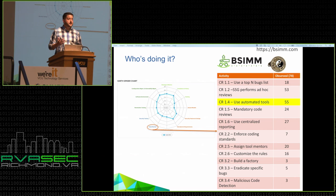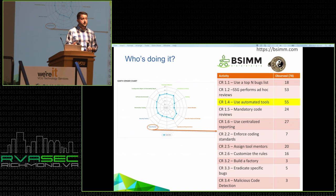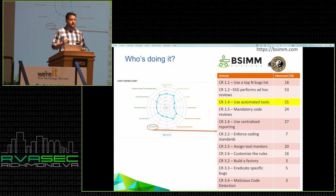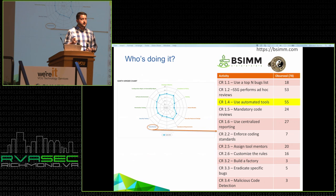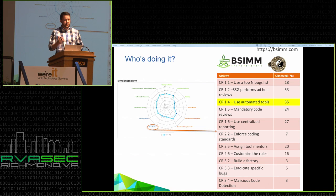The most common activity is 'use an automated tool.' That means at least 55 of 78 firms are buying static analysis tools. That's been consistent across different versions of BSIMM over the years. Everybody buys a tool — maybe puts it on the shelf and it becomes shelfware. They plop it in the environment and say they've checked the box on static analysis capability. The BSIMM doesn't say whether you're doing it well; it just says whether you did the activity or not — all this means is they've scanned some code.